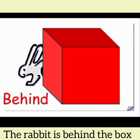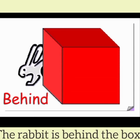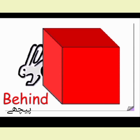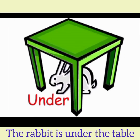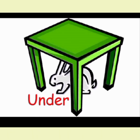The rabbit is behind the box — peechhe chupne ki kooshish kar raha hai. Behind means peechhe. Next: the rabbit is under the table — under the table. Is soorat-e-haal mein hum 'under' preposition use karte hain.